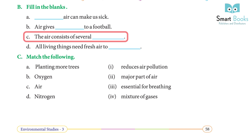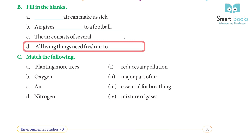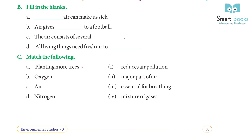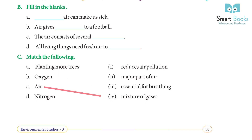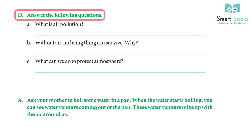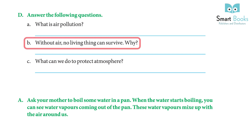Fill in the blanks continued: c) The air consists of several dash. Answer: Gases. d) All living things need fresh air to dash. Answer: Breathe. Exercise C — Match the following: a) Planting more trees — reduces air pollution. b) Oxygen — essential for breathing. c) Air — mixture of gases. d) Nitrogen — major part of air. Exercise D — Answer the following: a) What is air pollution? Answer: Air that contains smoke, harmful gases, and germs is called air pollution.